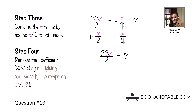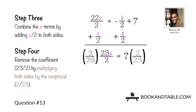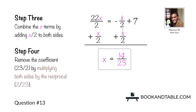Now remove the coefficient 23/2 by multiplying both sides by the reciprocal, 2/23. That leaves you with x on one side, and 7 times 2 gives you 14 over 23 on the other side. So the answer to question number thirteen is x is equal to 14/23.